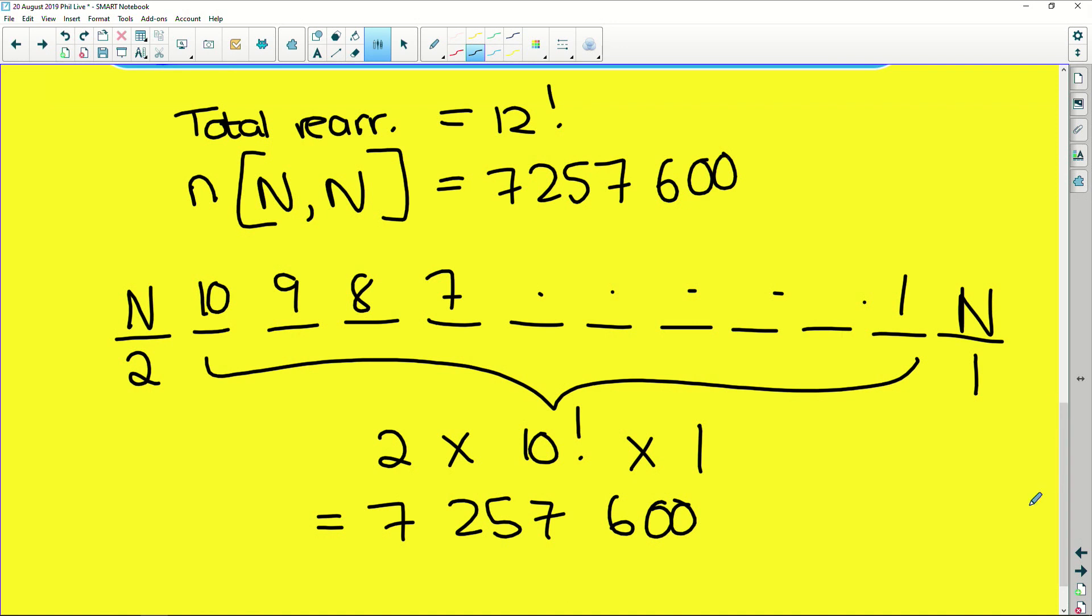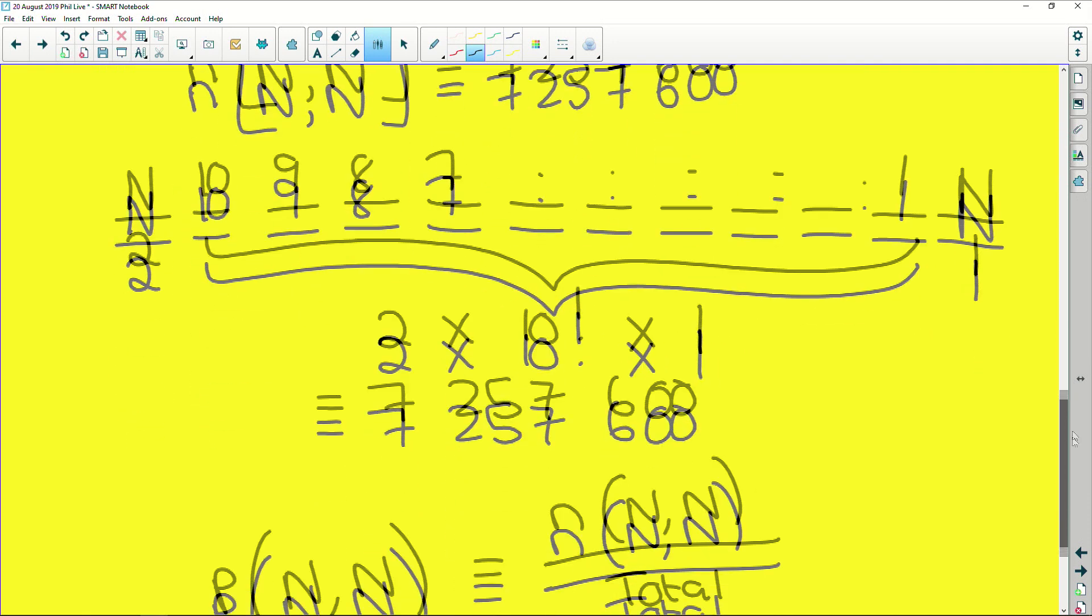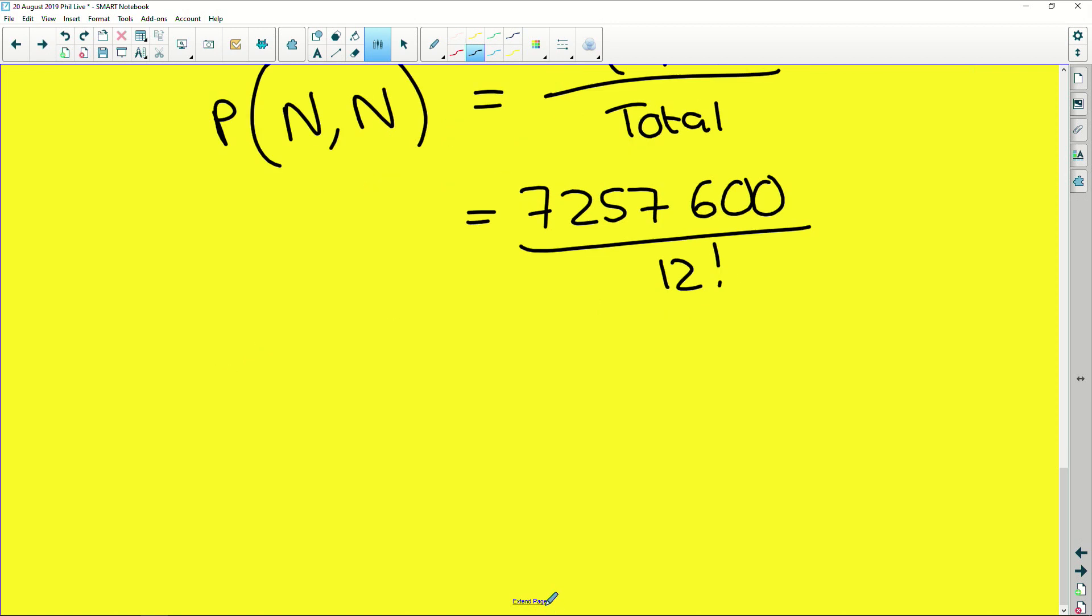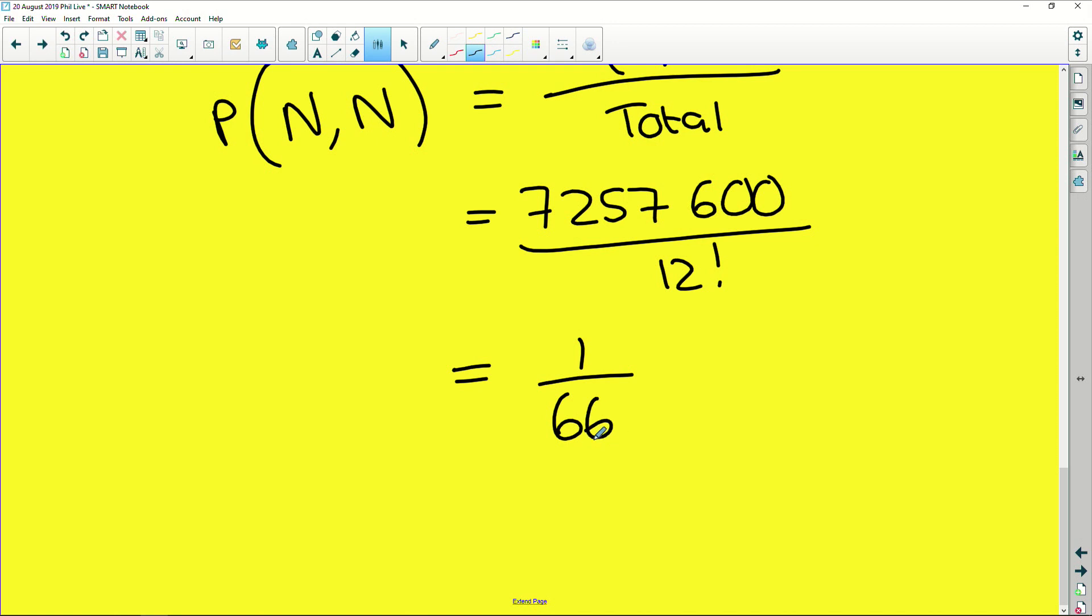So now, to find the probability, remember, probability of starting and ending with N is going to be the number of NN divided by the total. That's how you work out probability. So we are going to get the number, which was the 7,257,600, divided by the total, which we said was 12 factorial. So let's put that into our calculator. We get 1 out of 66. So out of those massive numbers, it was like 190 million or something massive number of rearrangements. They're basically saying that the probability or the odds of finding a rearrangement that starts and ends with the letter N is 1 out of 66. It's a very small probability.